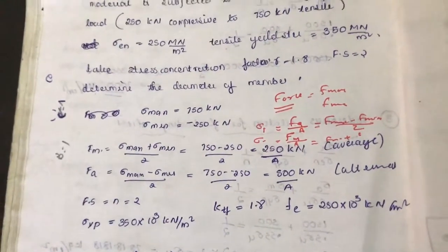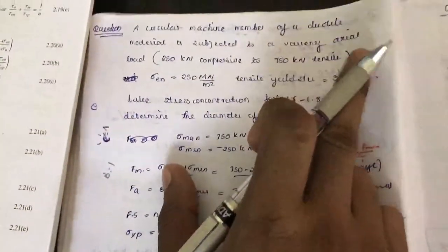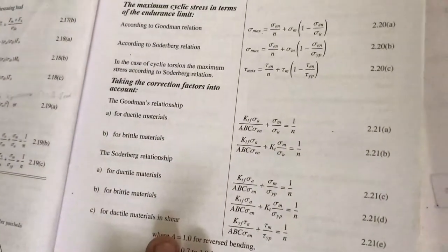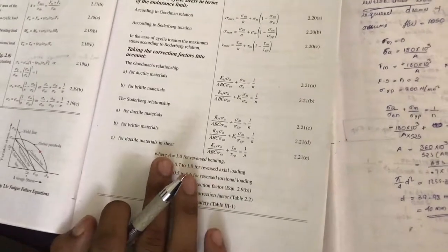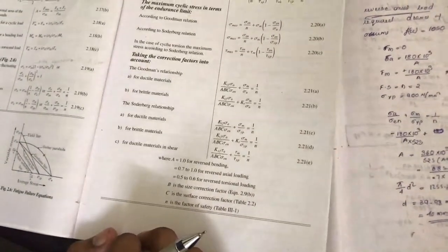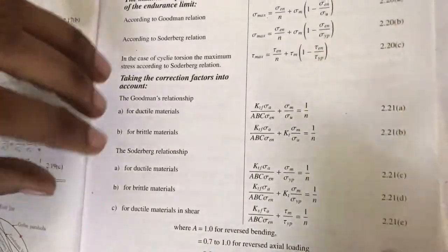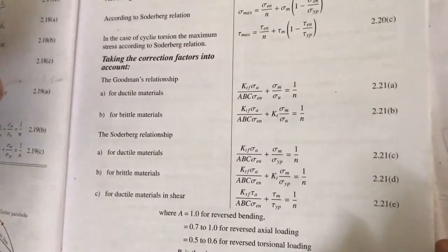First, we need to identify the formula to use. Usually we use equation 2.19a, but there we are not considering the stress concentration factor, surface factor, or size correction factor. In usual cases, we consider equations 2.21a and 2.21b. The peculiarity of section 2.21 is that it contains correction factors, and we will be using those formulas.